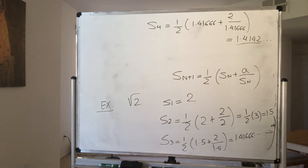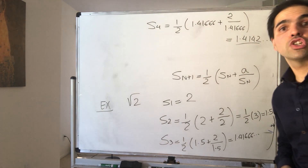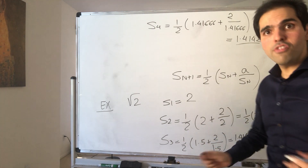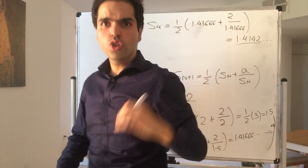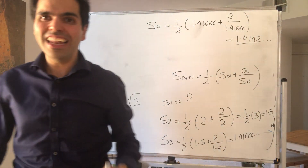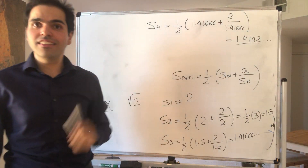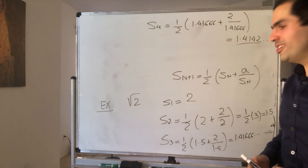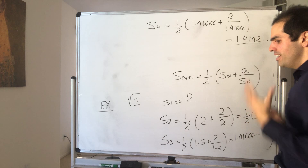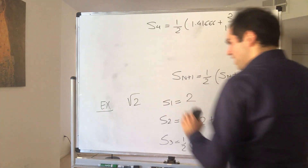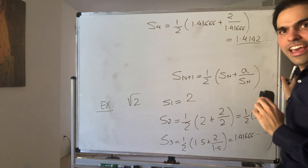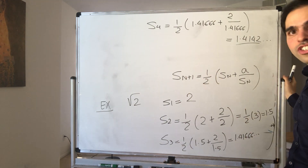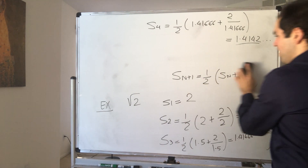Which is already the beginning of the decimal expansion of the square root of two. This is super fast — in fact, you can show this is quadratically fast. It's really a hidden Newton's method, but that's not what I'm here for today. Today I'm here to show that this sequence converges to the square root of a.